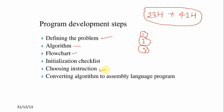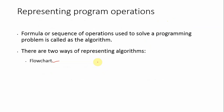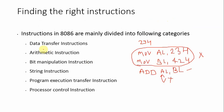The next development step is choosing instructions. There are six types of instructions available: data transfer instruction, arithmetic instruction, bit manipulation instruction, string instruction, program execution transfer instruction, and processor control instruction. For example, for addition we use the arithmetic instruction. You choose the appropriate instruction type based on what operation your program needs to perform. This is called the choosing of the instruction.